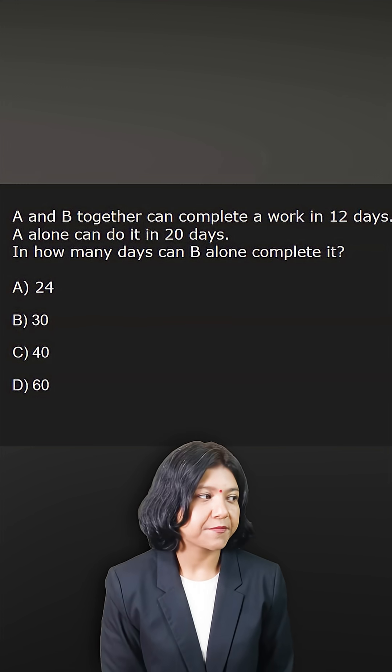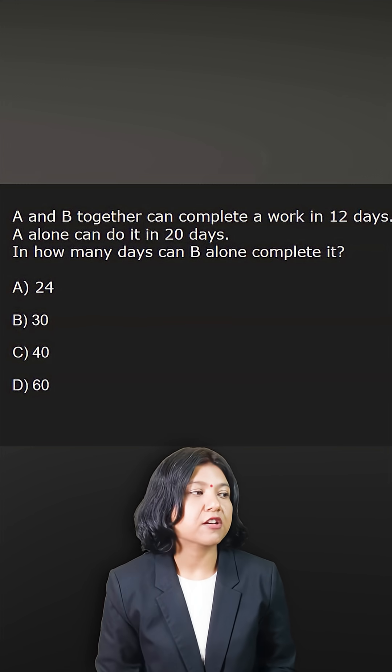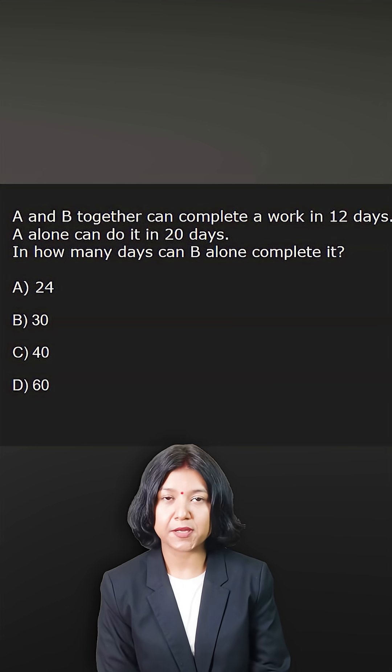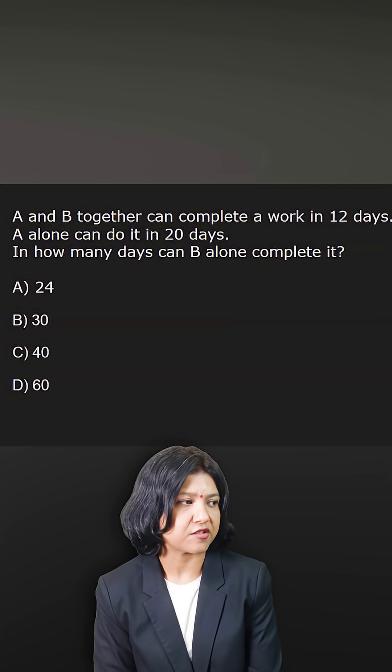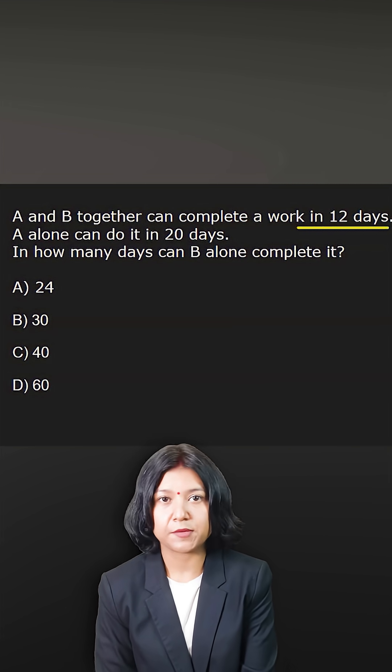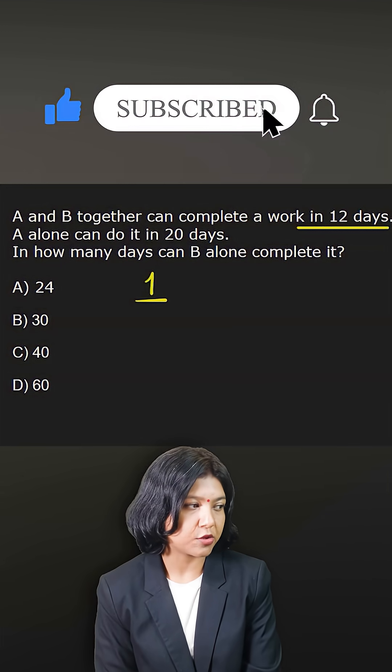This question is about time and work. You have two people who can together complete a work in 12 days. Remember that two people will work faster, so their one day work will be higher. So their one day work will simply be 1 by 12.